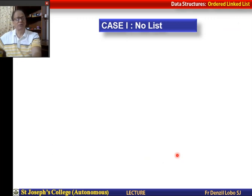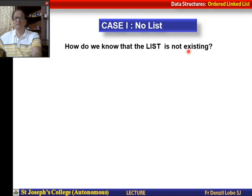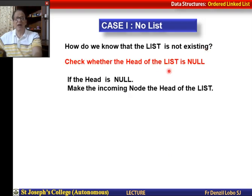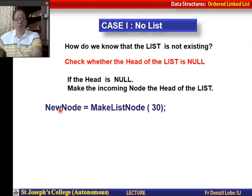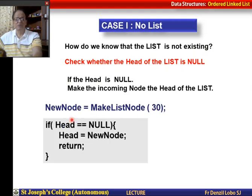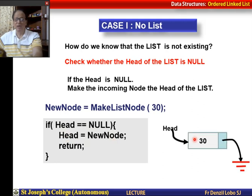Case 1: there is no list, so head is equal to null. We check whether the head of the list is null. If the head is null, we make the incoming node the head of the list. So if we've made a new node containing 30 and head is equal to null, we assign the address of this new node to head. This new node becomes the head, containing 30 and pointing to null — the list created with just one node.